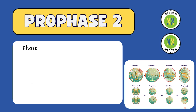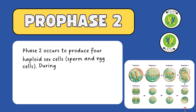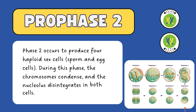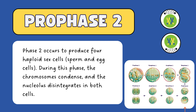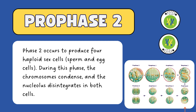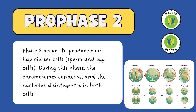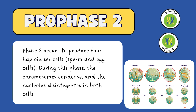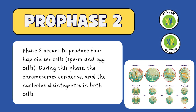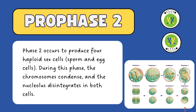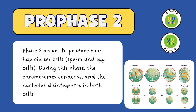Next is prophase II, where we prepare for the second round of division to produce four haploid sex cells. Here, the chromosomes condense again and the nucleolus disintegrates in both cells.